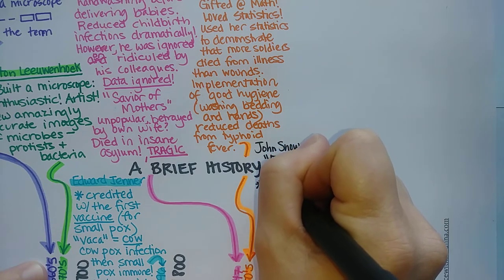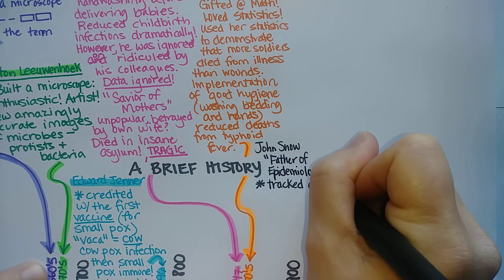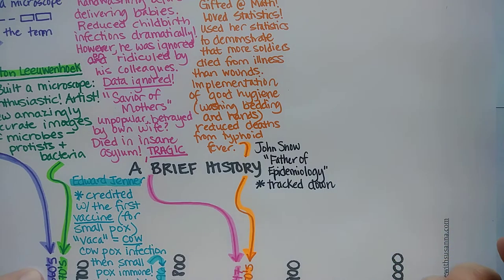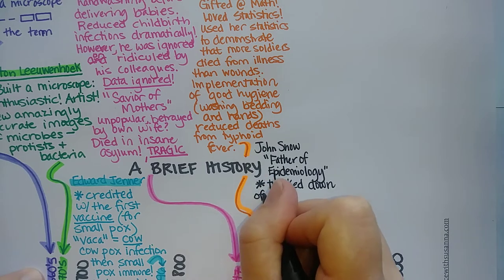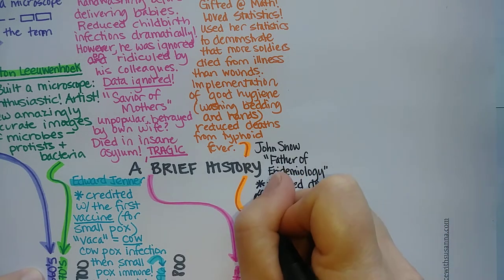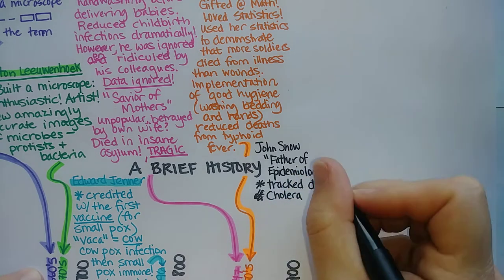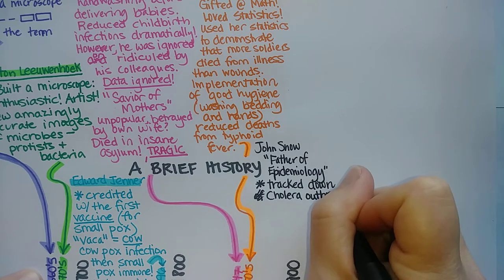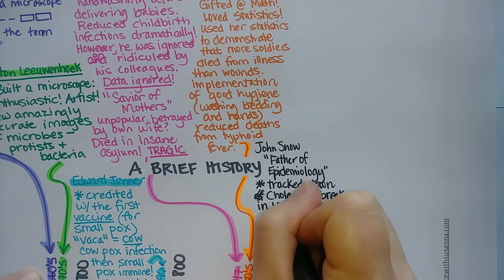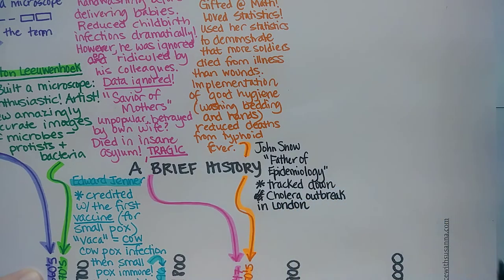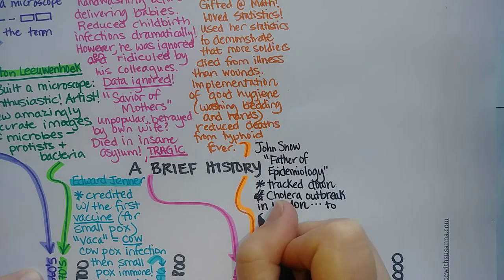He tracked down the source of a cholera outbreak. Cholera is a type of diarrheal disease that can kill people within a couple of days, and babies are very susceptible. He tracked down the cholera outbreak in London and was able to trace it to a particular water pump.